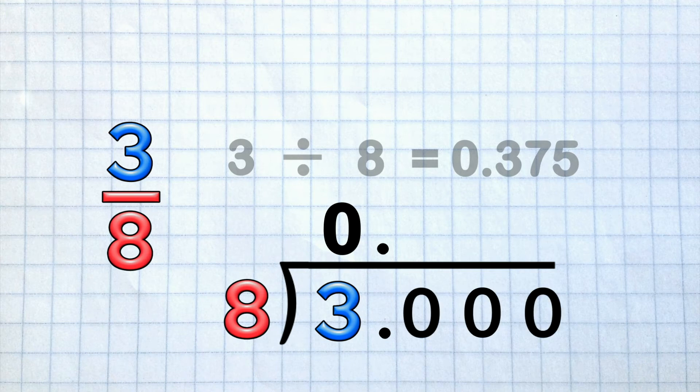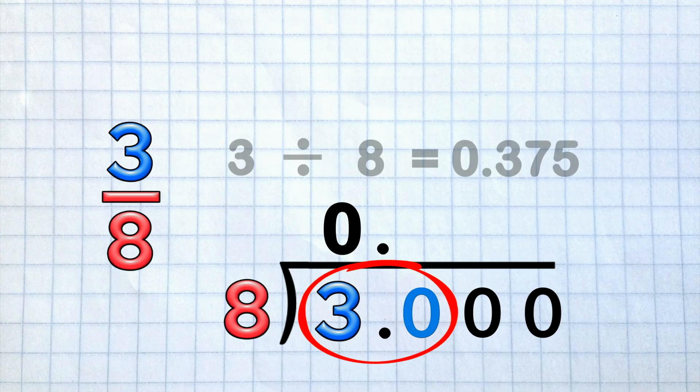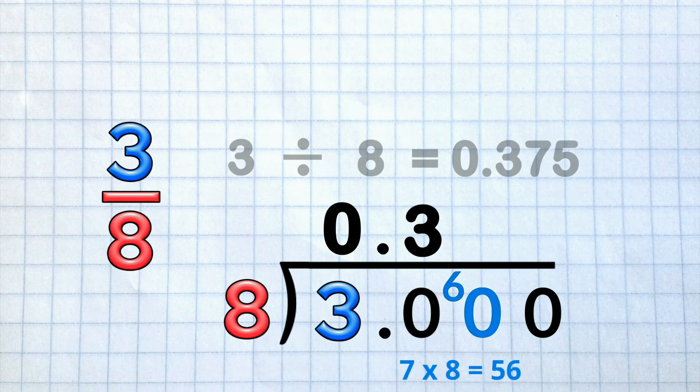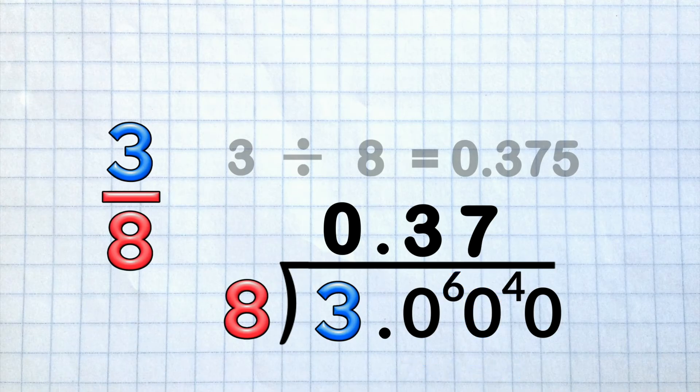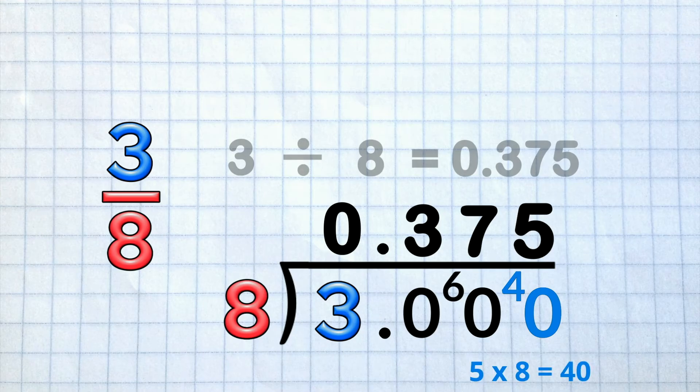Now we say, how many 8's in 30? 3 8's are 24, remainder 6. How many 8's in 60? 7 8's are 56, remainder 4. And how many 8's in 40? 5 8's are 40, no remainder this time. So we're all done!